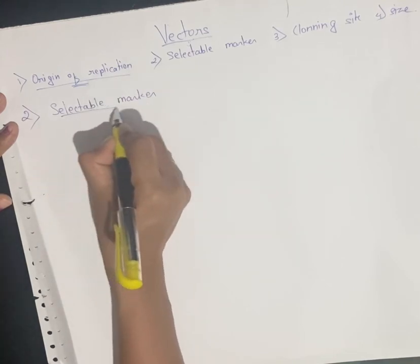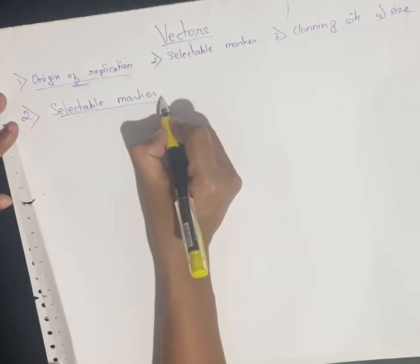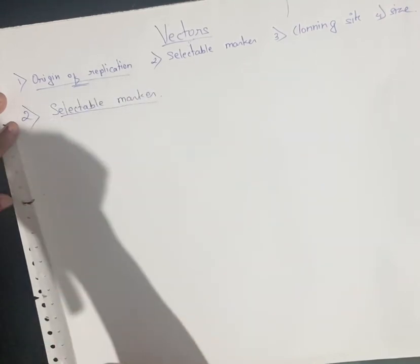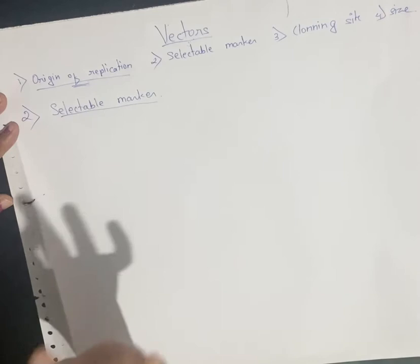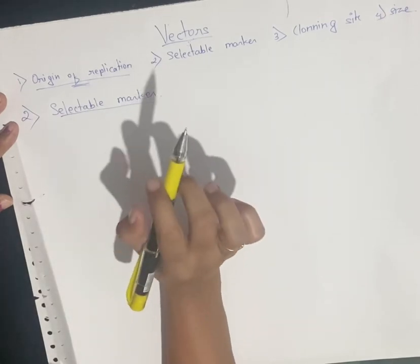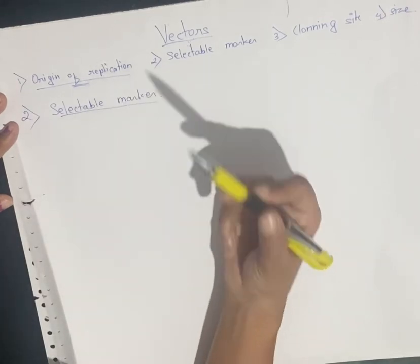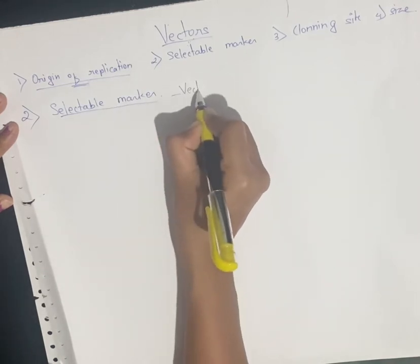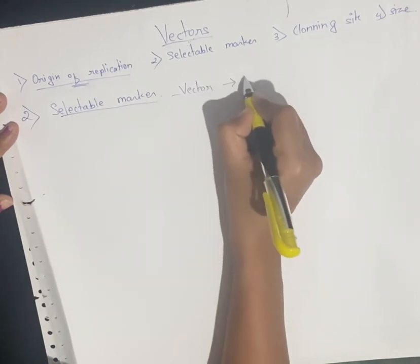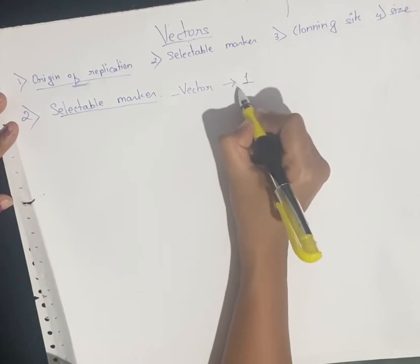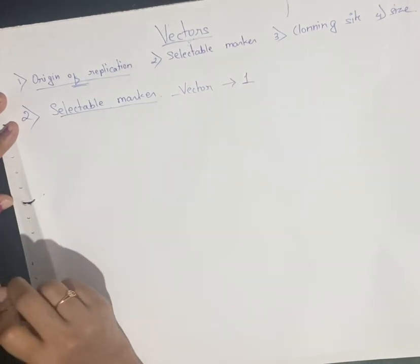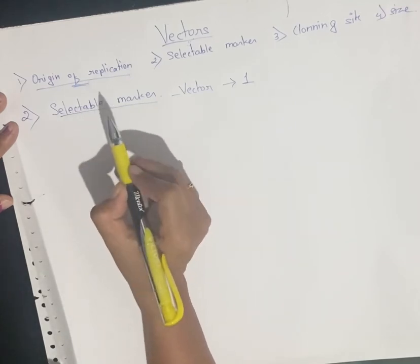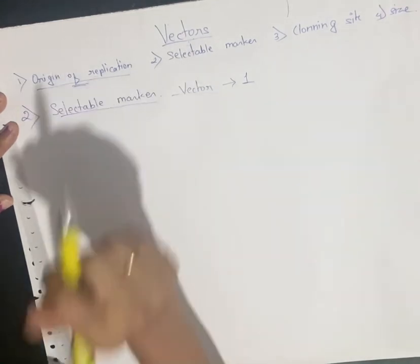The selectable marker is the marker used to identify the plasmid with the desired alien DNA or the gene of interest. A vector should have at least one selectable marker. The purpose is to identify the plasmid that carries the alien DNA.